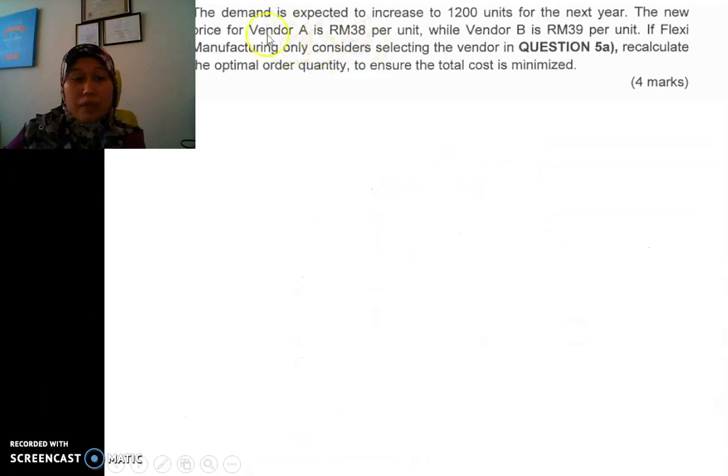Let's go to the part B. The part B say that expected demand for the next year is going to be 1200. So it means that our optimal Q has changed. And then also, there's a change of price. Vendor A is 38 ringgit. Vendor B is 39 ringgit. If flex manufacturing only consider selecting the vendor in question 5A, remember in 5A, we choose vendor B. So we're going to consider vendor B. Recalculate the optimal order quantity, that's the new Q. And then also the total cost.